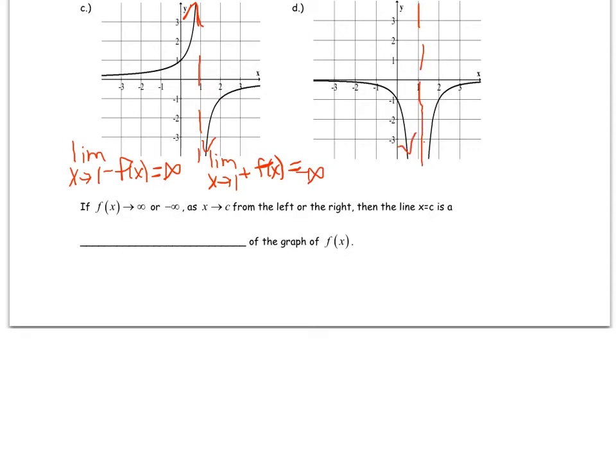On d, we have going down. So the left-sided limit would be negative infinity and the right-sided limit would be negative infinity. Kind of like b, they're the same in this case.